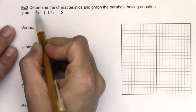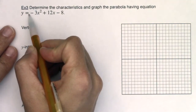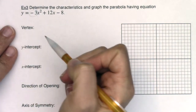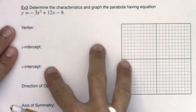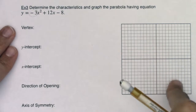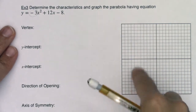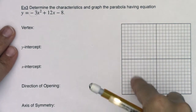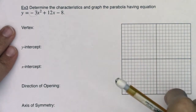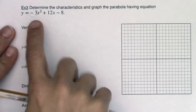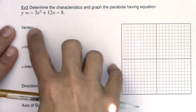One thing I want to point out: I notice the negative 3 here as the lead coefficient. So ultimately when I graph this, I know I'm going to have what I call a sad parabola — it's going to face down because that lead coefficient is negative. That's the only thing I know about it so far.